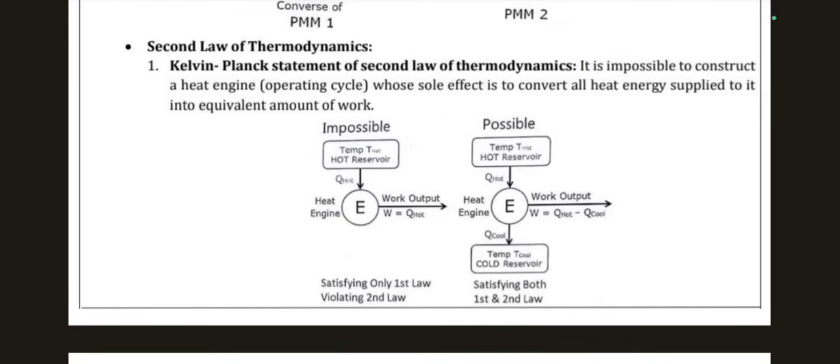The thermal efficiency of a heat engine is work output divided by heat input: η = (Q1 − Q2) / Q1, which simplifies to 1 − Q2/Q1. The Carnot or ideal efficiency is (T_hot − T_cold) / T_hot.